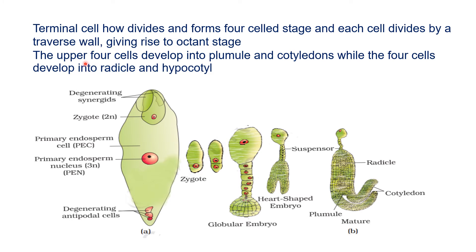The upper four cells develop into the plumule — the plumule will always be on the antipodal side — and cotyledons, while the lower four cells develop into the radicle and hypocotyl. And lastly, from the plumule the shoot system forms, and from the radicle the root system forms.